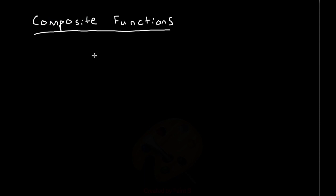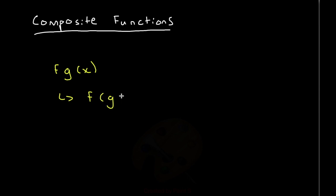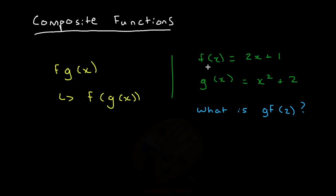Another special type of function is called a composite function. A composite function is basically a function inside another function. An example would be fg(x), which basically means f of g of x. So you do g of x, and then whatever the output of that is, you put that inside f. So an example would be: if f(x) = 2x + 1 and g(x) = x² + 2, what is gf(2)?